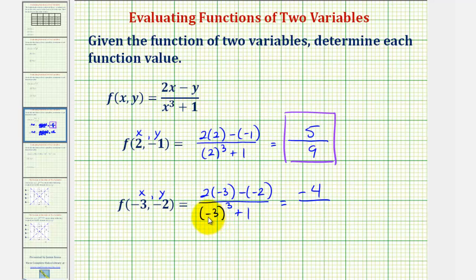Divided by, here we'd have negative three cubed, that's going to be negative 27 plus one, that's negative 26. First notice how we have a negative divided by a negative. So this simplifies to positive four 26. There's also a common factor of two between four and 26. If we divide out the common factor of two, this simplifies to two-thirteenths.